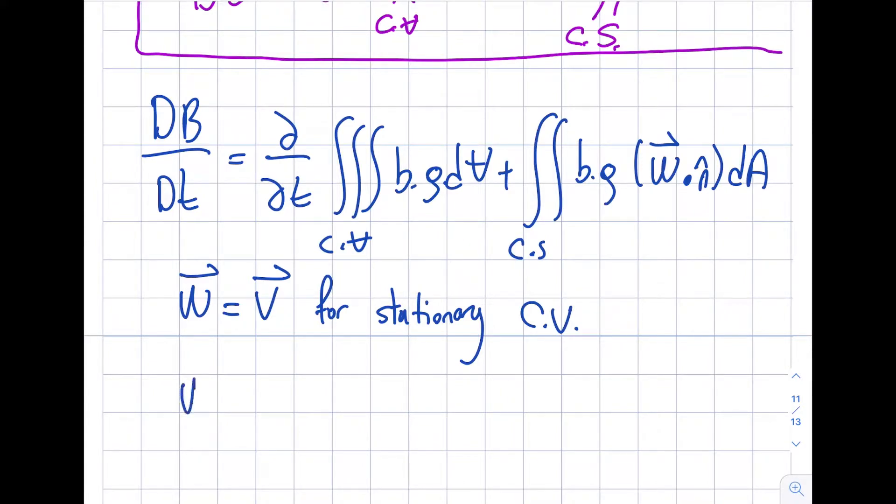But what this w is, it is the flow velocity measured with respect to the control surface. So what I mean by with respect to control surface, maybe it is moving. I gave the example of a bus traveling 50 miles per hour. My control volume is inside the bus, so I have to look at the relative movement of the air within the bus. I'm going to exclude that 50 miles per hour in that particular example.